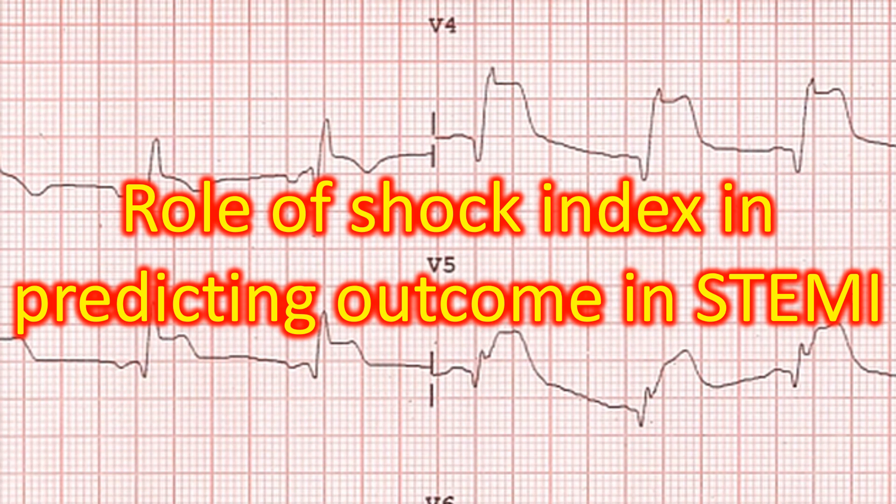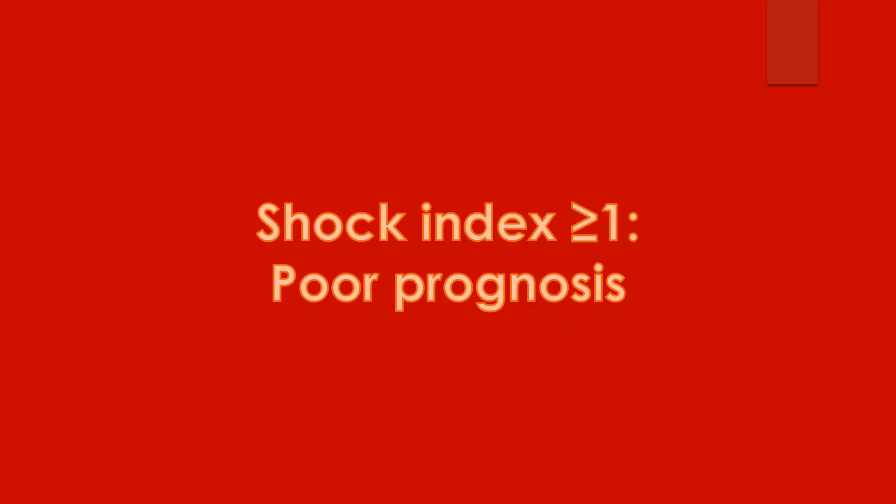Shock index is the ratio of heart rate to systolic blood pressure, which allows rapid bedside risk stratification. Modified shock index is the ratio of heart rate to mean arterial pressure. Shock index is a simple bedside measure introduced by Algover and Associates as early as 1967.